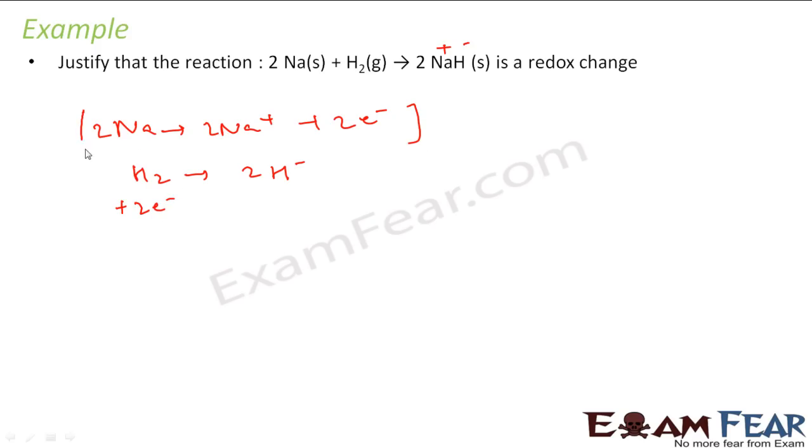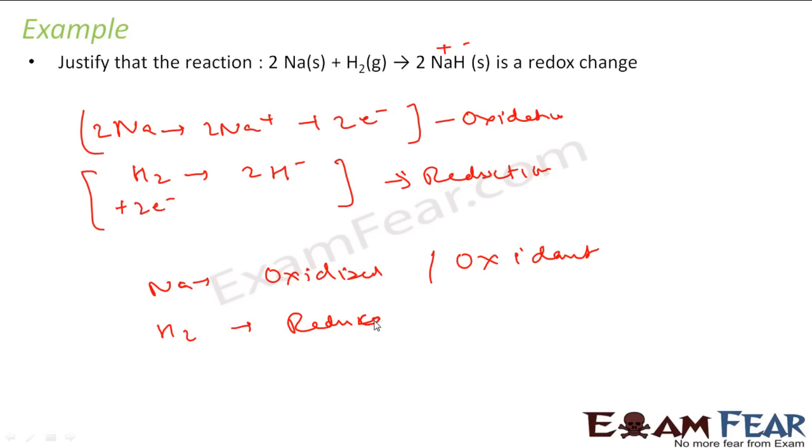And this gave 2 electrons and this needed 2 electrons. So here we see this is nothing but loss of electron. So this is oxidation process and this is a reduction process. So here sodium got oxidized and it is nothing but oxidant. And hydrogen got reduced. It is also called reductant.